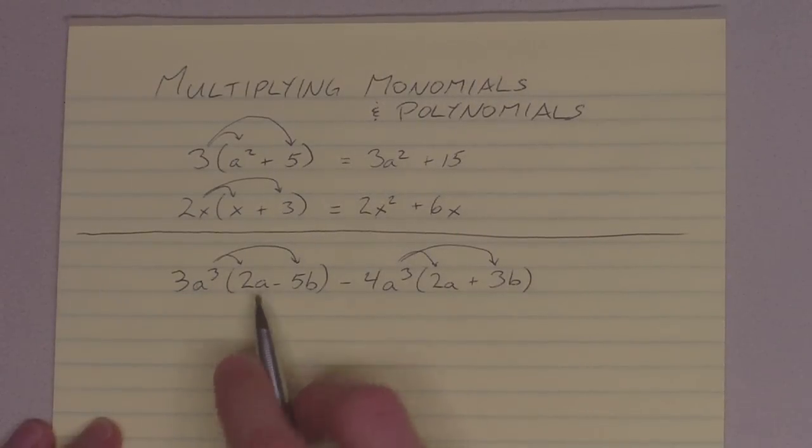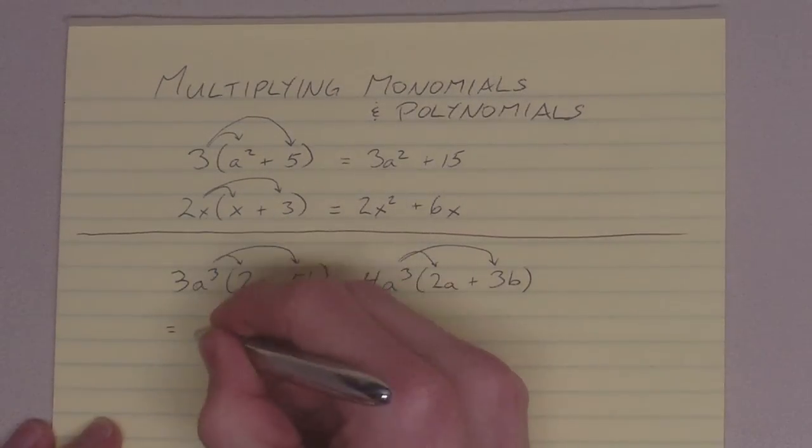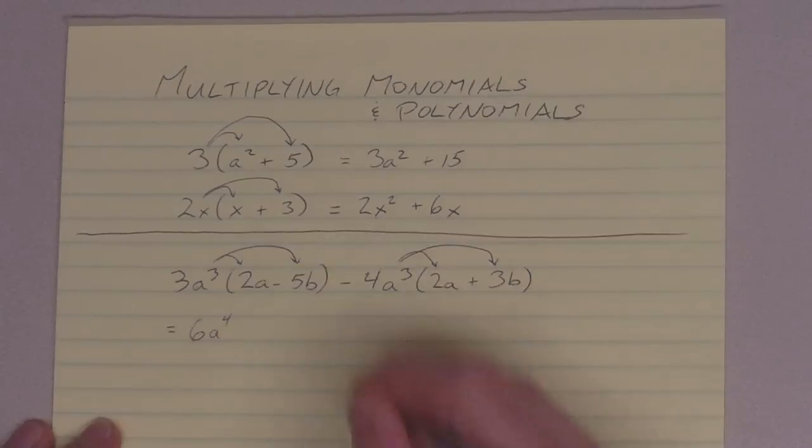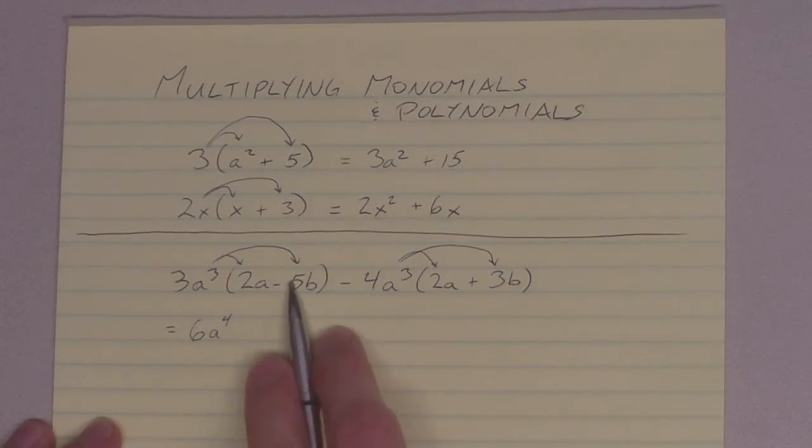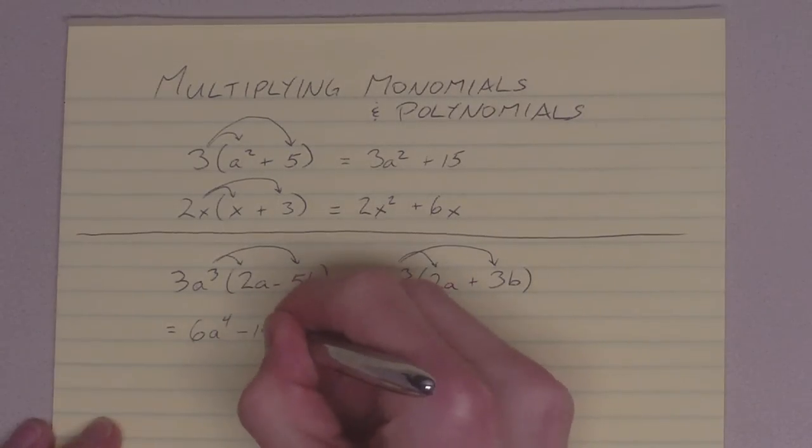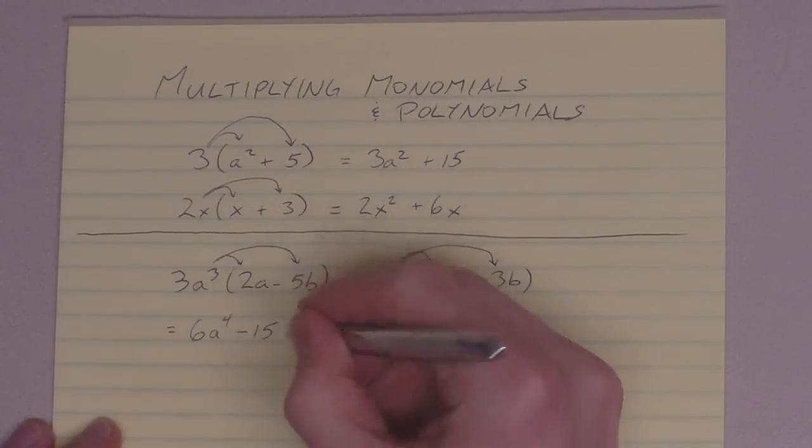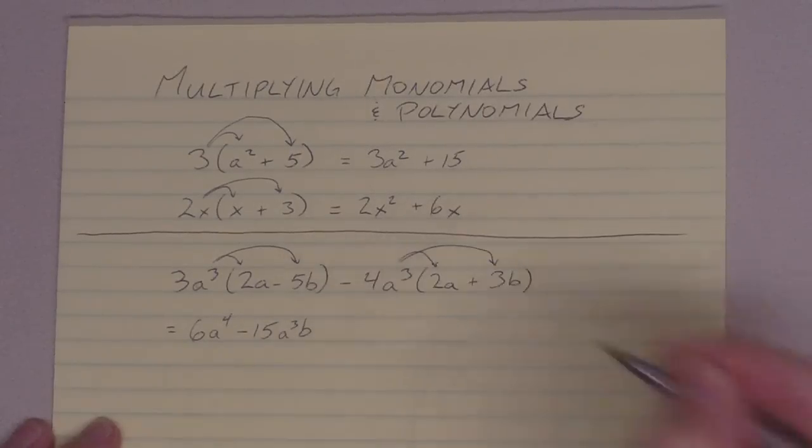3a cubed times 2a. Multiply the coefficients, 6. Add the exponents, 4. 3a cubed times negative 5b. Remember to include that negative there, unless you're going to make some mistakes. Multiply the coefficients, negative 15. a cubed times b gives us a cubed b.